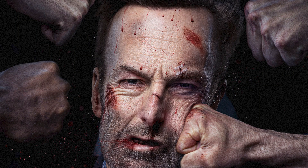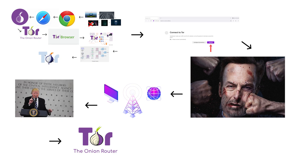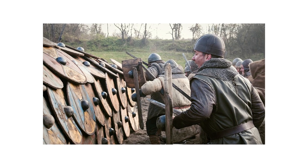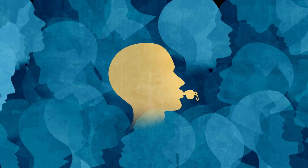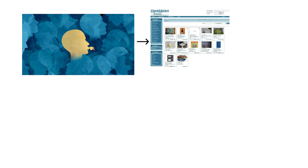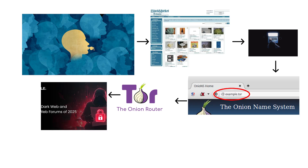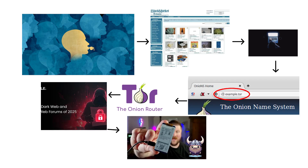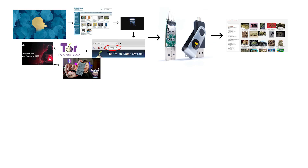By the time your signal arrives, nobody — not your ISP, not your government, not even Tor itself — knows who you are or where you came from. That anonymity is both the shield and the weapon of this level. Here, you'll find everything from whistleblower drop boxes to black markets that trade in the forbidden. The famous .onion domains, accessible only through Tor, host encrypted forums, privacy tools, and marketplaces that look almost normal until you read what's for sale.